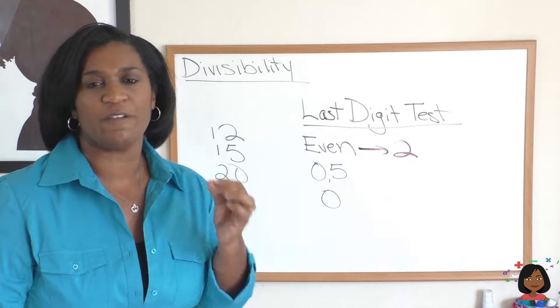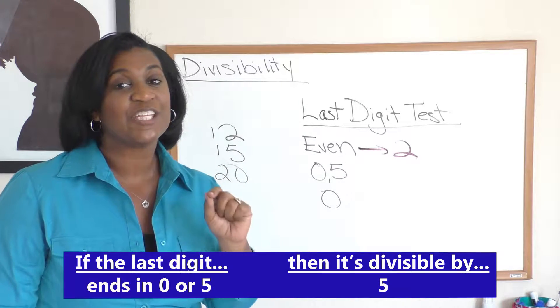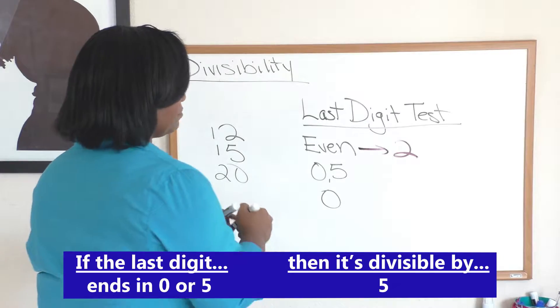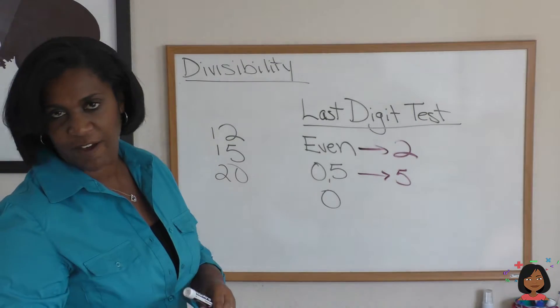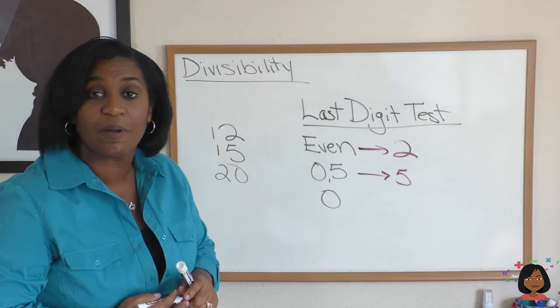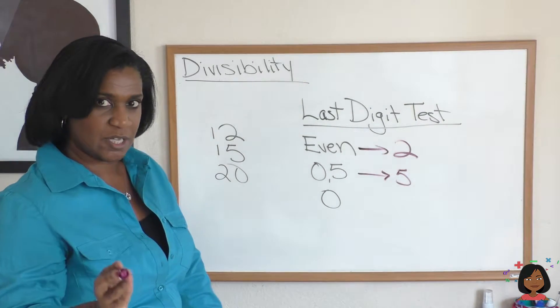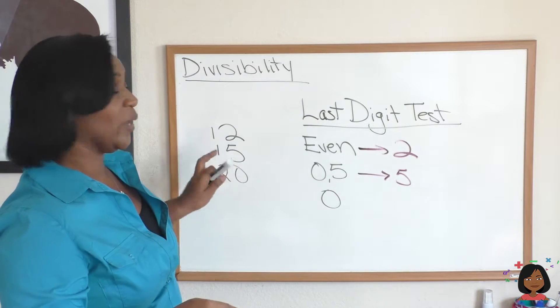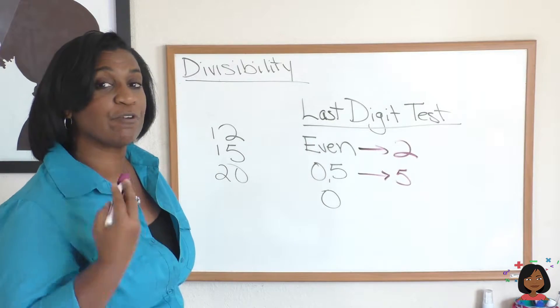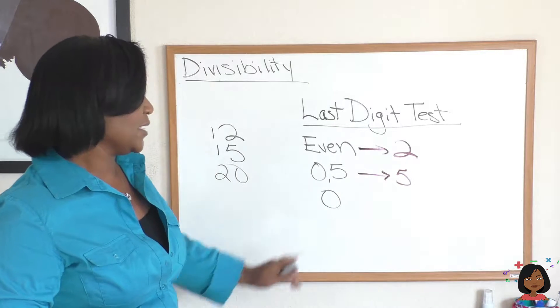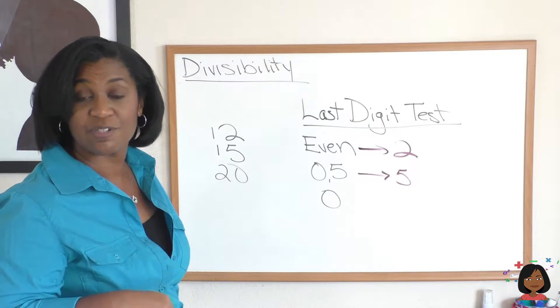What about the numbers 0 and 5? When your number ends in 0 or 5, it means that your number is divisible by 5. Let's test it out. So, does the number 12 end in 0 or 5? Nope. And guess what? Not divisible by 5. 5 can't go into 12 equally. What about 15? Does it end in 5 or 0? Yes, it does. That means that 5 can go into 15. 15 is divisible by 5. It goes in 3 times. What about the number 20? It ends in a 0. That means that 20 is divisible by 5. How many times? It goes in 4 times.